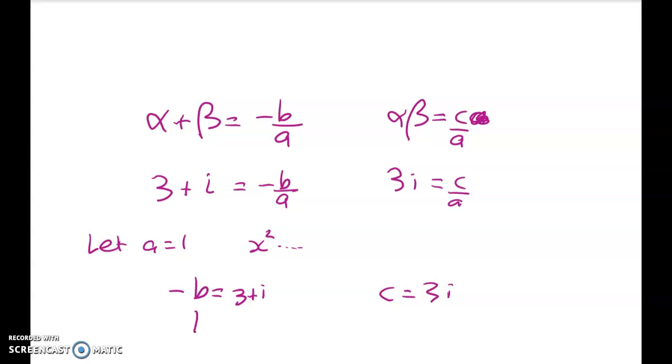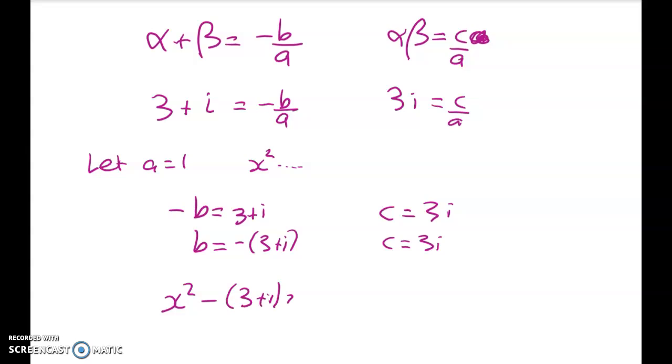So we're done. We're just about done. b can be this, c can be this. My quadratic will be x² - (3 + i)x + 3i = 0. So there you go.